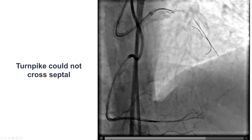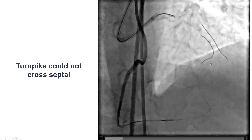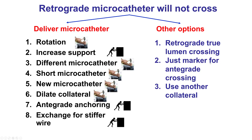We did have some difficulty advancing the microcatheter through the septal collateral. The potential actions when the microcatheter will not cross after guide wire crossing through a collateral include changing the microcatheter or dilating the collateral with a 1.0 balloon. Sometimes getting extra support, for example with a guide extension, can help as well.